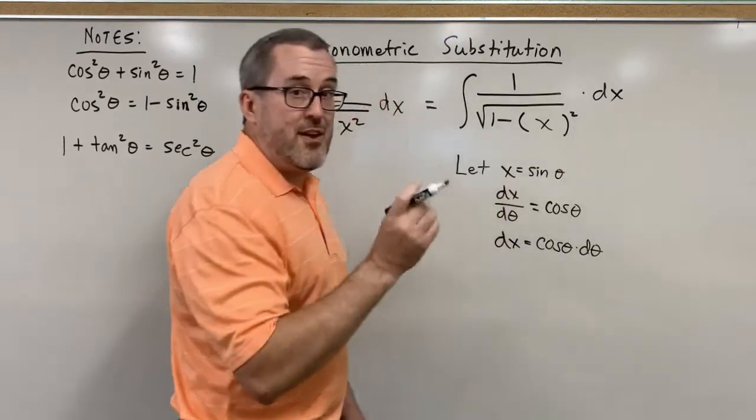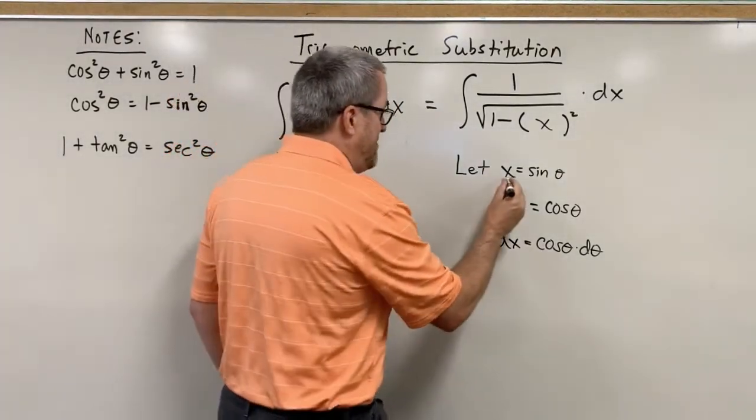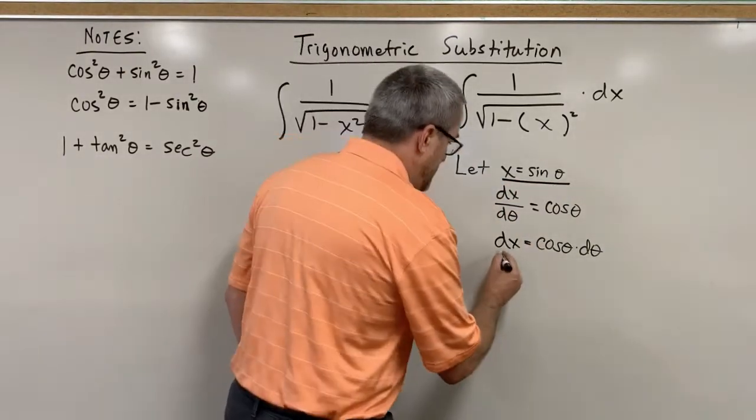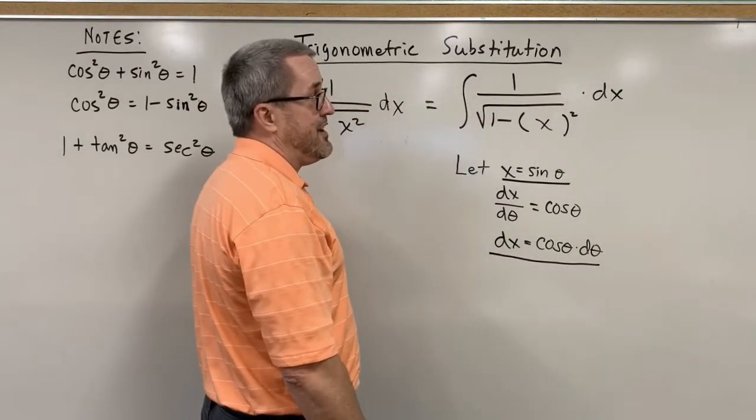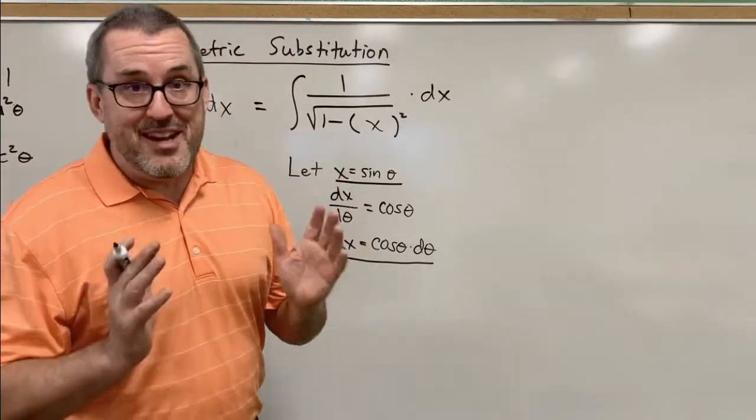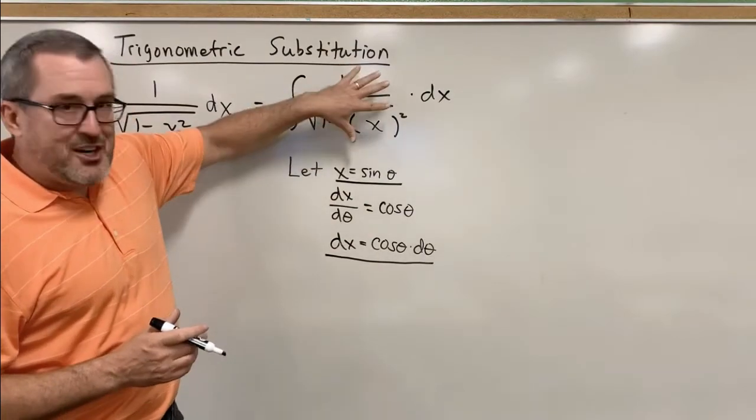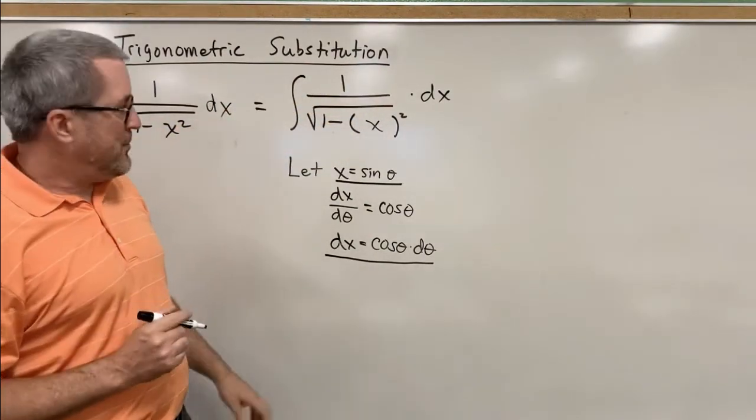Just algebraically manipulate this. dx is therefore equal to the cosine of theta times dθ. Just multiply the dθ over. So we're going to make two very deliberate, intentional, and strategic moves. Move number one, we're going to let x equal sine of theta. Move number two, therefore dx is going to equal cosine of theta dθ. So we've made some very deliberate and strategic moves here so that the structure that was lacking initially will be evident.